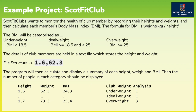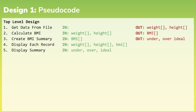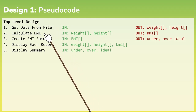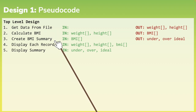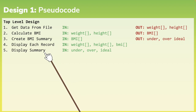Then the number of people in each category should be displayed. If we look at this design using pseudocode, we start by specifying the top level design — the main steps. In order to satisfy the functional requirements of this programme, we're required to get the data from a file, calculate the BMI, create a BMI summary, display each record and display a summary.